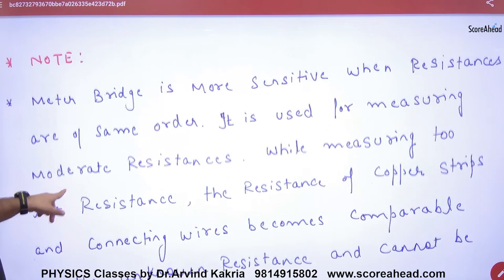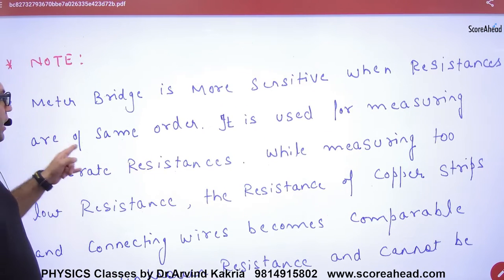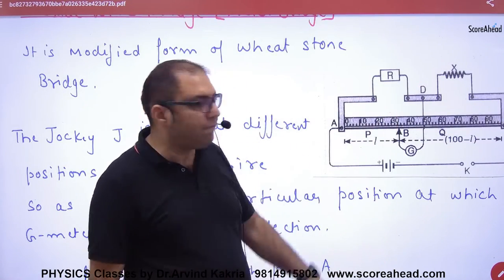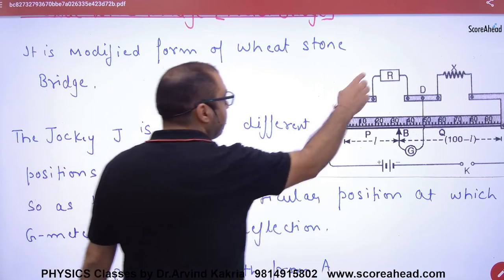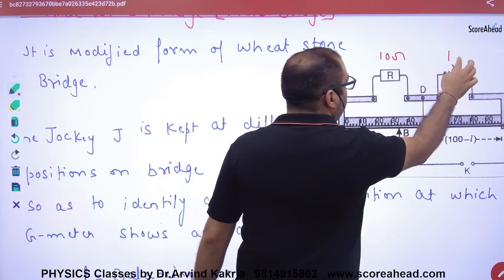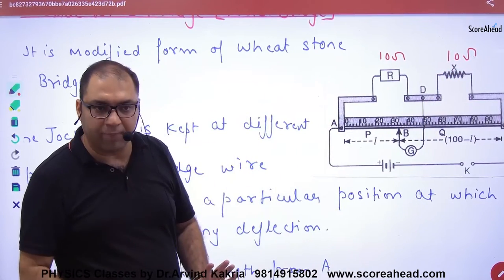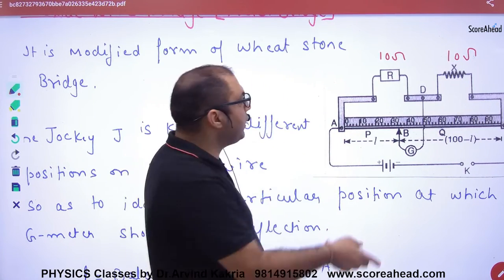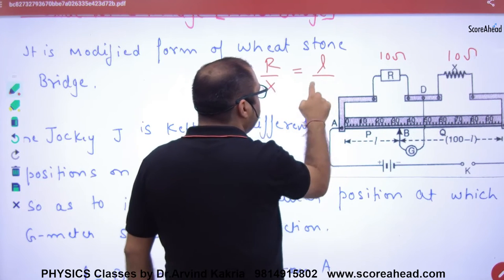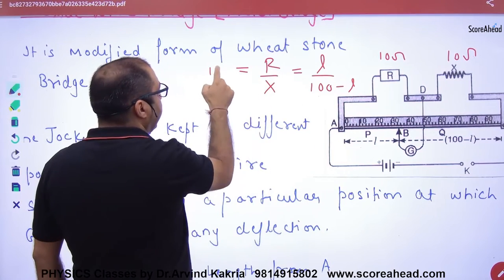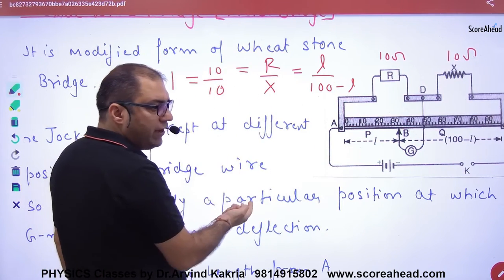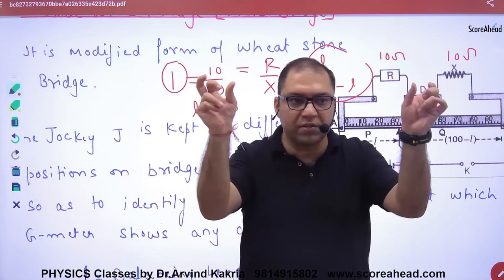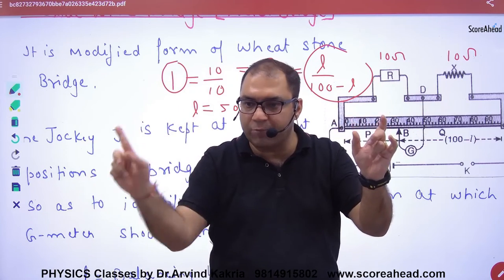The meter bridge is more sensitive when resistances are of the same order. For example, if R equals 10 ohms and X equals 10 ohms, then R/X = 1, and solving gives L = 50 cm — exactly the midpoint. When both resistances are of the same order, the balancing point will be near the middle of the wire.